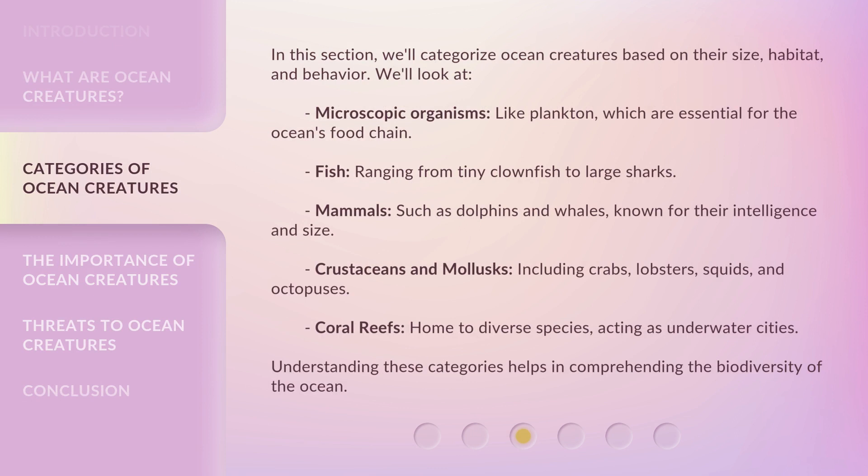In this section, we'll categorize ocean creatures based on their size, habitat, and behavior. We'll look at microscopic organisms, like plankton, which are essential for the ocean's food chain. Fish, ranging from tiny clownfish to large sharks.